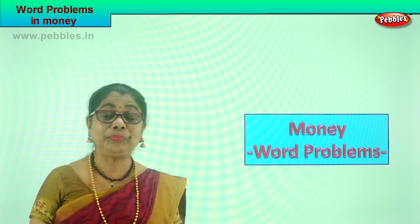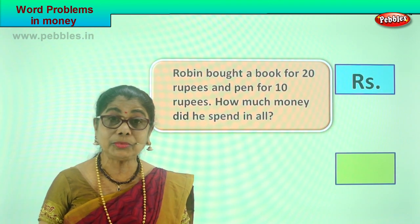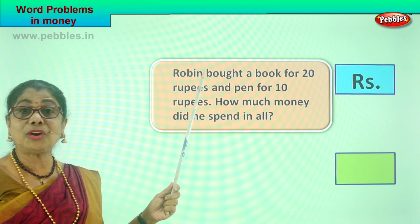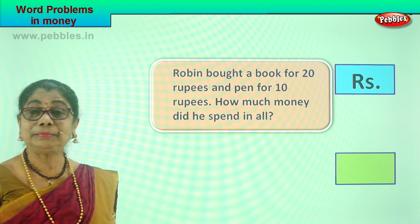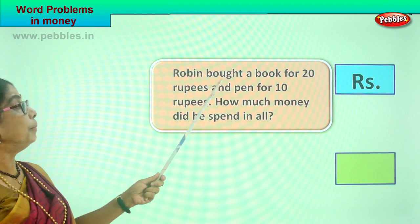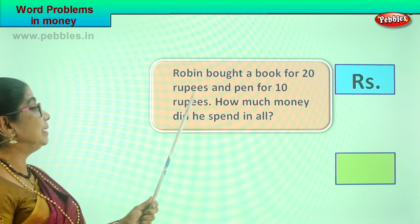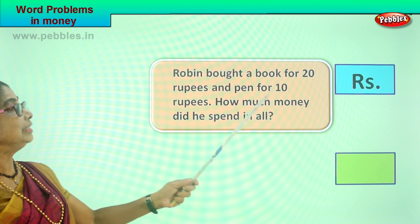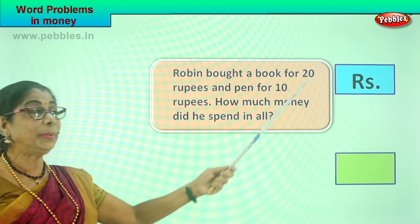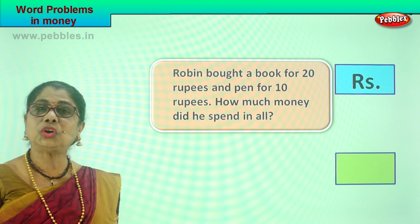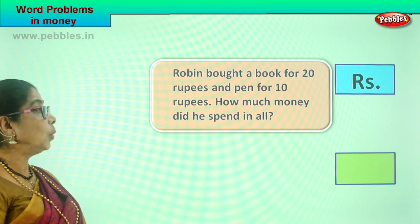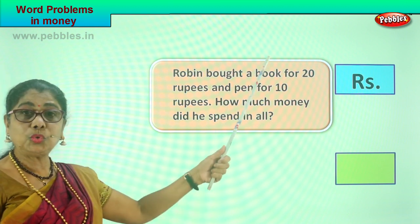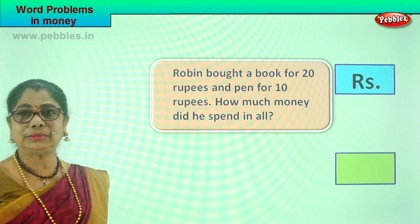Let us look at our first problem. Let us read together and work together. Robin is going shopping, maybe with his mommy. Robin bought a book for rupees 20 and a pen for 10 rupees. The question is: how much money did he spend in all? Two items he bought — what is the total amount? That's what we are asking.